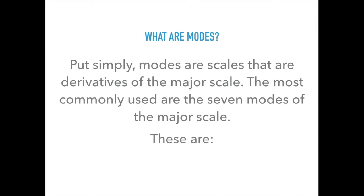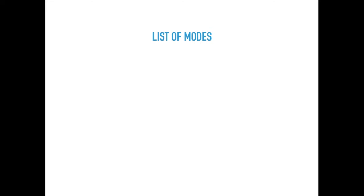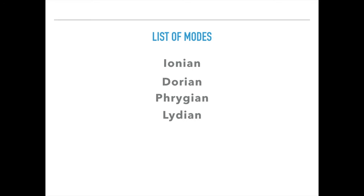So what are modes? Well, put simply, modes are scales that are derivatives of the major scale. The most commonly used are the seven modes of the major scale, and these are: Ionian, Dorian, Phrygian, Lydian, Mixolydian, Aeolian, and Locrian.